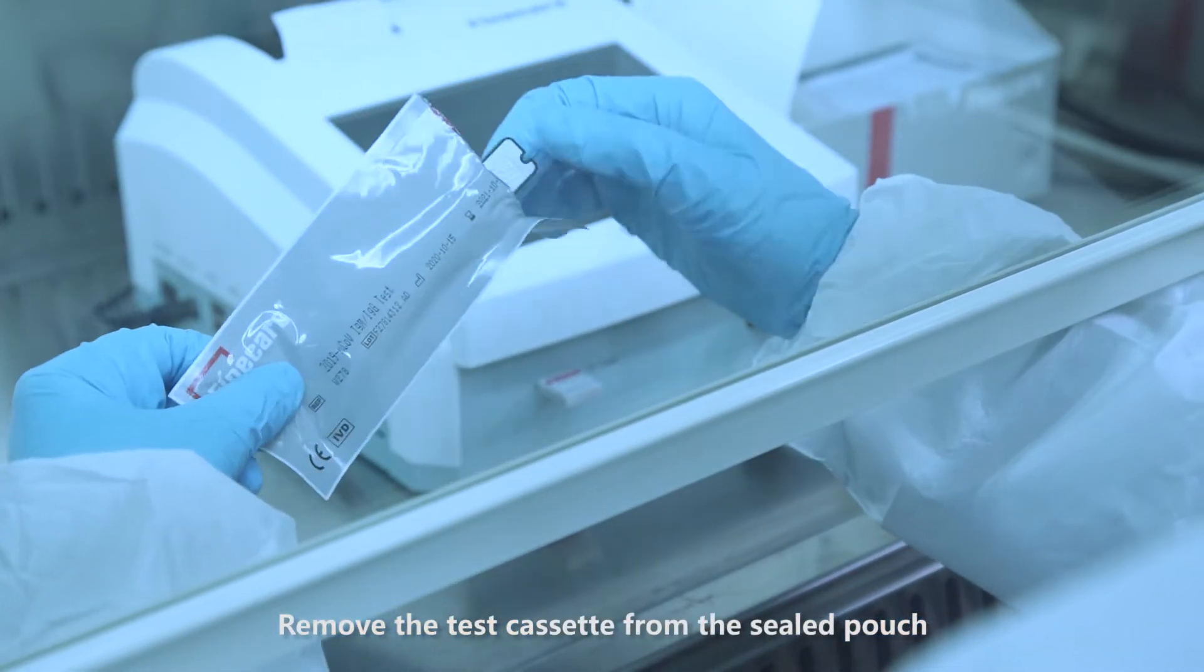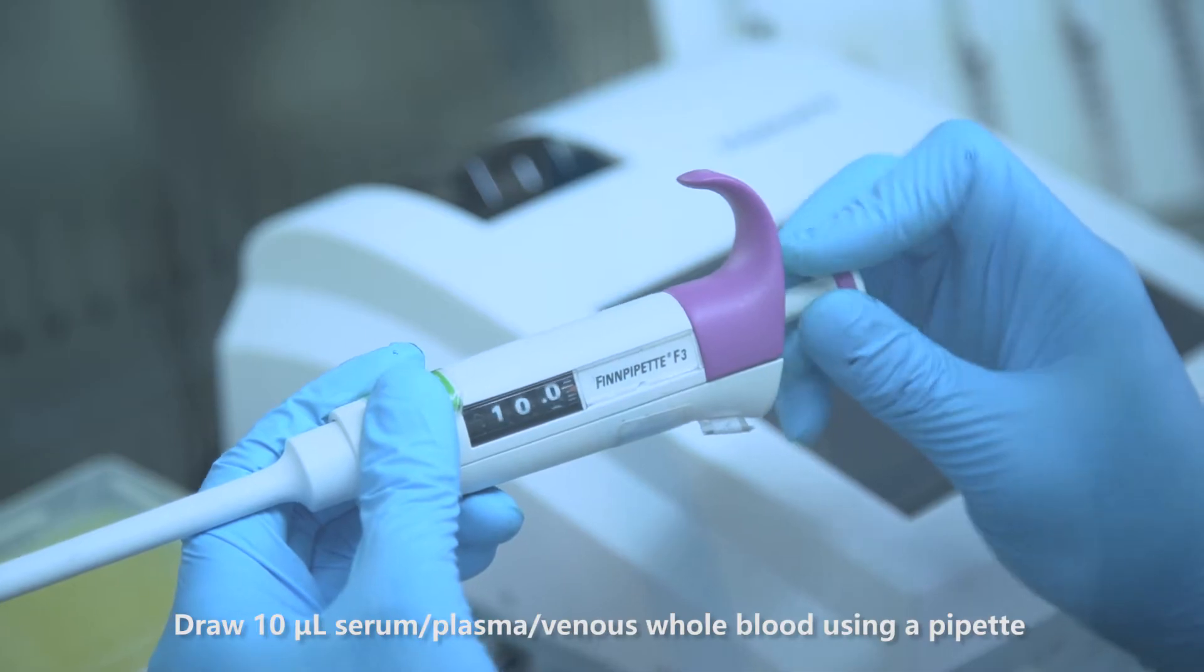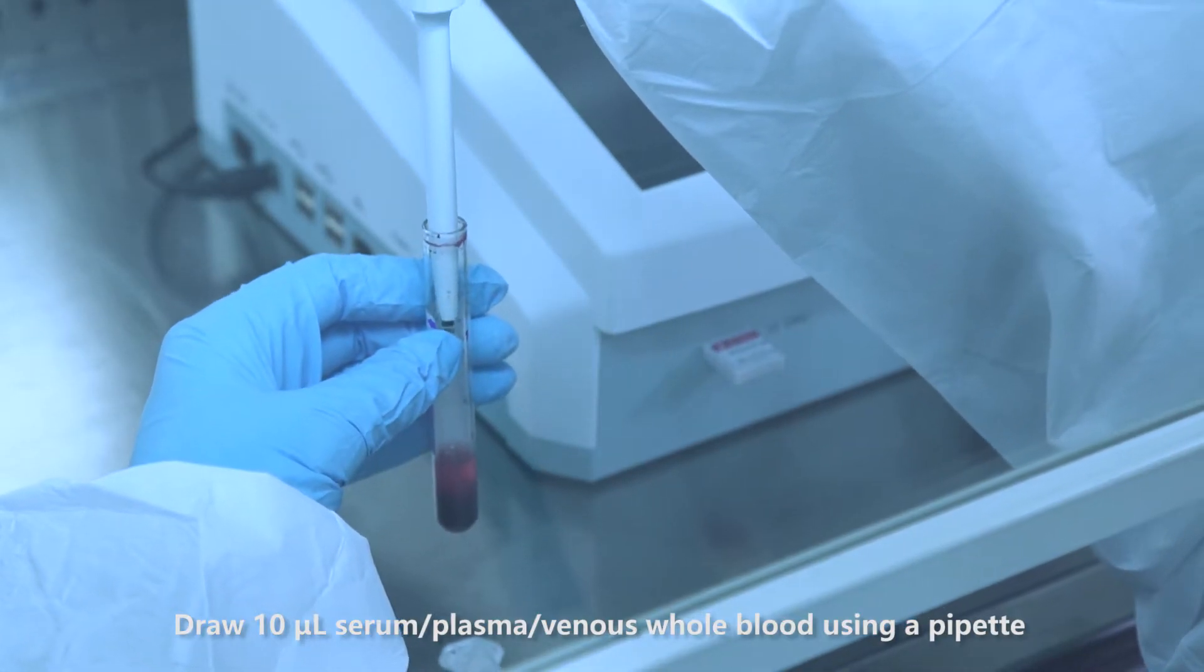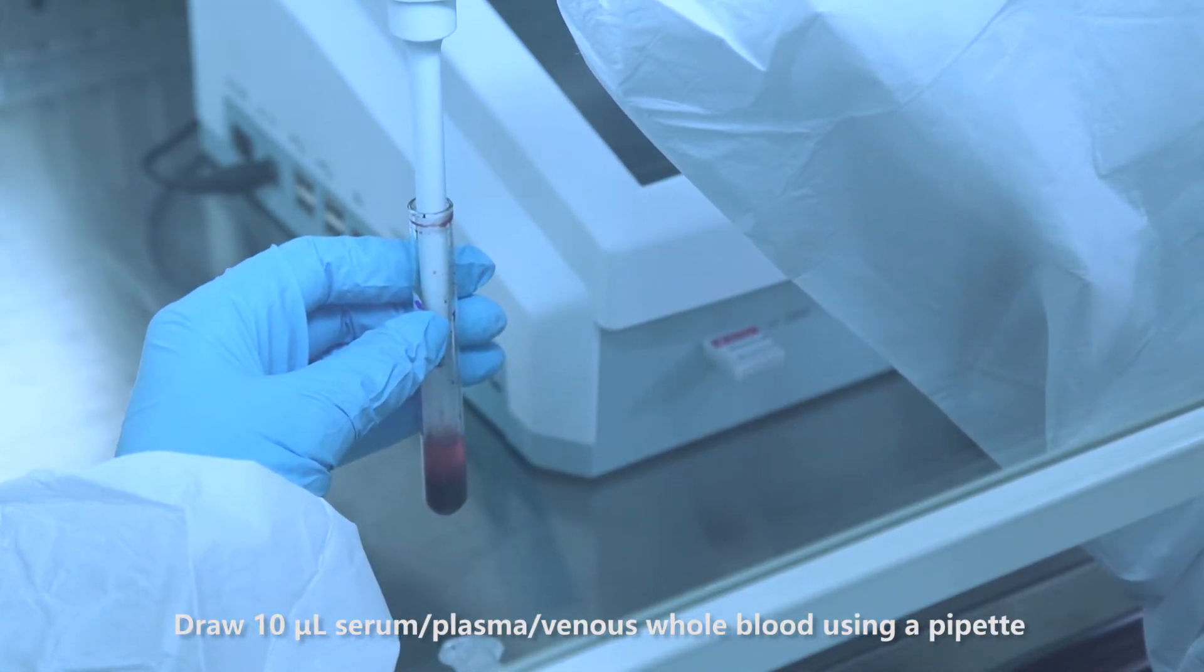Remove the test cassette from the seal pouch. Draw 10 microliters of serum, plasma, or venous whole blood using a pipette.